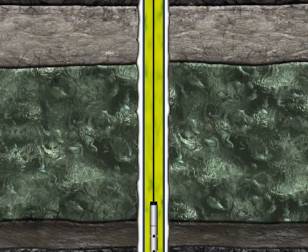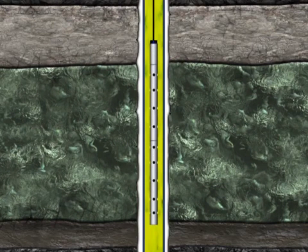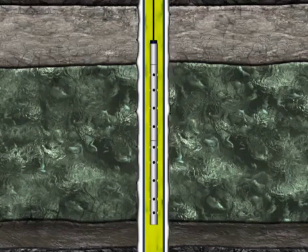Using sensors, part of the gunstring, the guns can be accurately positioned in front of the targeted reservoir. The charges in the gun are now ready to be ignited using the surface perforating control equipment. Once the correct depth has been confirmed, the gun is fired.